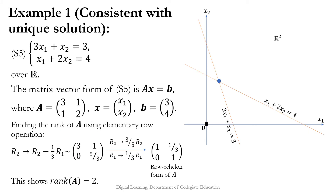Here is the first example of a consistent system with a unique solution. System S5: 3x₁ + x₂ = 3 and x₁ + 2x₂ = 4 over the real field. You can observe the graph of these two equations drawn in R², representing two straight lines. The matrix-vector form of S5 is Ax = b where A is the 2×2 matrix with entries 3, 1, 1, 2; x is a 2×1 vector with entries x₁, x₂; and b is a 2×1 vector with entries 3, 4.